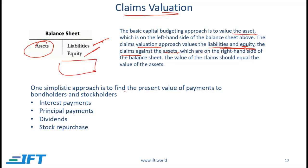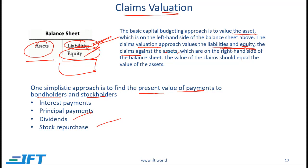One simplistic approach is to find the present value of payments to bondholders and stockholders. All the payments made to bondholders, when discounted, give us the value of liabilities. Then all payments made to shareholders — dividend payments and share repurchases — when discounted, give us the value of equity. Adding these numbers gives us the total for liabilities plus equity, which equals total assets.